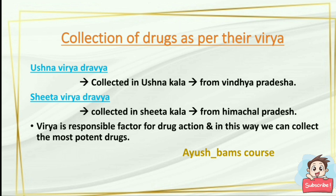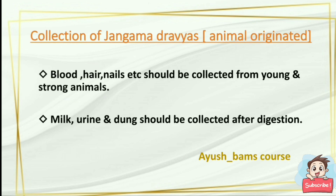Collection of drugs as per their virya: ushna virya dravyas are collected in ushna kala from Vindhya Pradesh, and sheeta virya dravyas are collected in sheeta kala from Himachal Pradesh. Virya is the responsible factor for drug action, and in this way we can collect the most potent drugs.